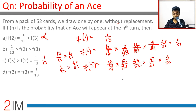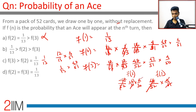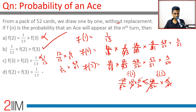Now comparing f(2) and f(3): f(3) has an extra factor of 47 by 50 compared to f(2). Since 47 by 50 is less than 1, f(3) is less than f(2), which is less than 1 by 13.